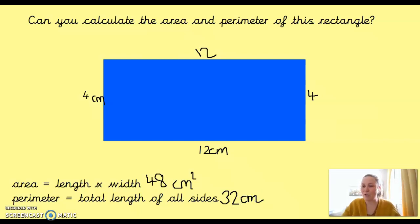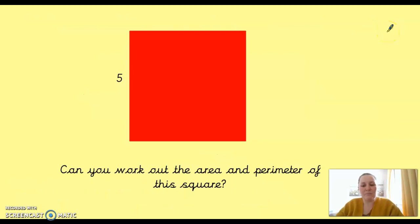Let's have a little look and a check on squares. So, exactly the same formula, actually, but obviously all the sides of the square are the same. So, pause here and find out the area, the space inside, and the perimeter, the length all the way around the edge.